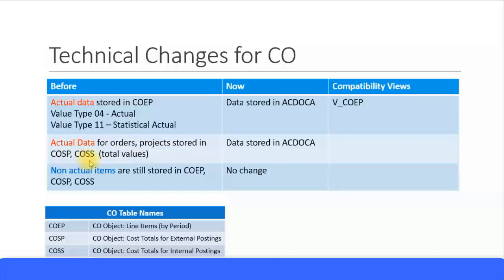Actual data for orders and projects, which had their total values in COSP and COSS tables, will also be stored in the ACDOCA table. In HANA, you don't need separate total value tables — line item views aggregate to produce totals. Therefore, no compatibility view is required, and actual data for orders and projects previously in COSP and COSS will now be in the ACDOCA table.